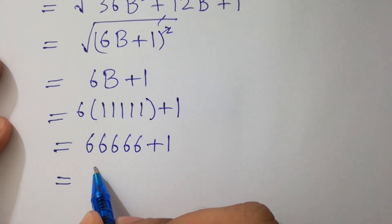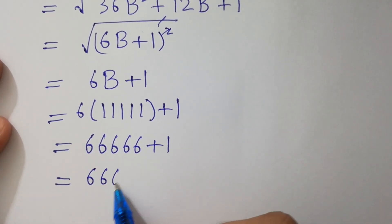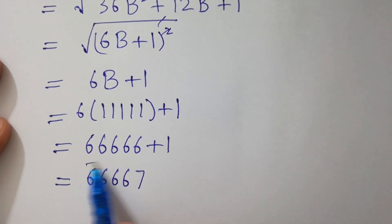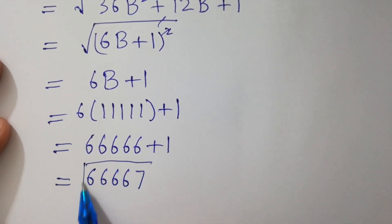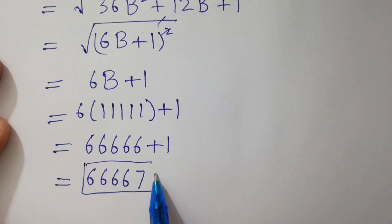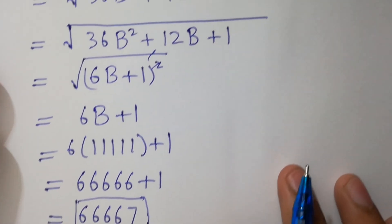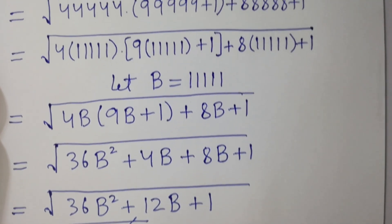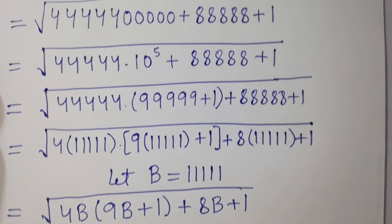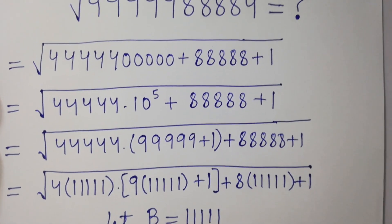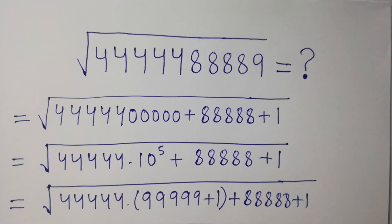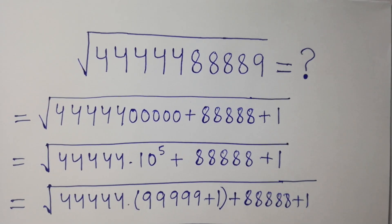We have 1, 2, 3, 4 times 6, 7 — which is our correct answer. Thanks for watching this video. Please subscribe to this channel to get notifications of new videos. Goodbye!